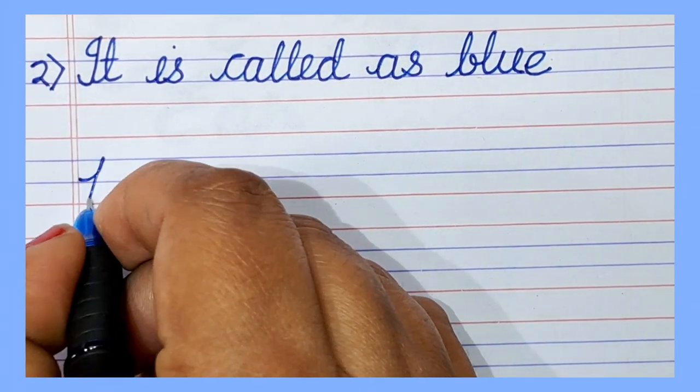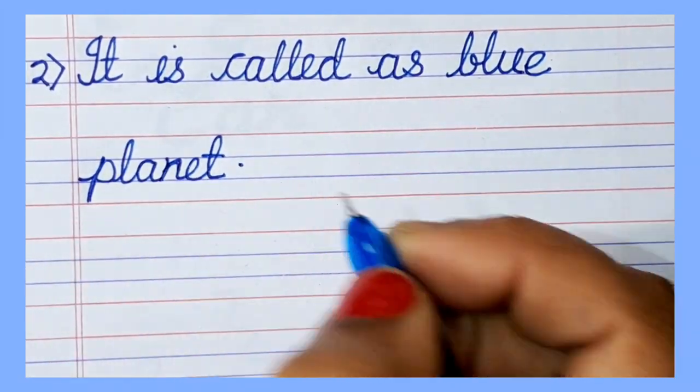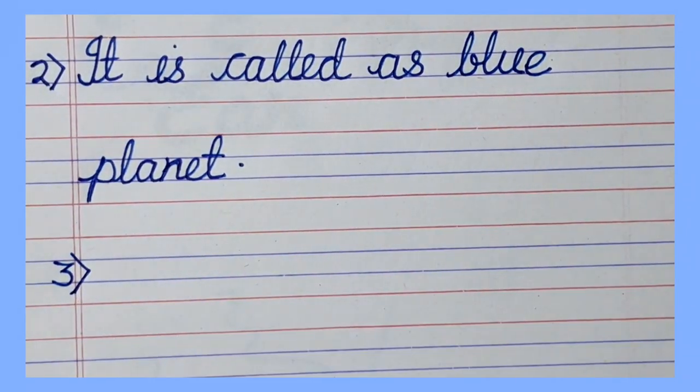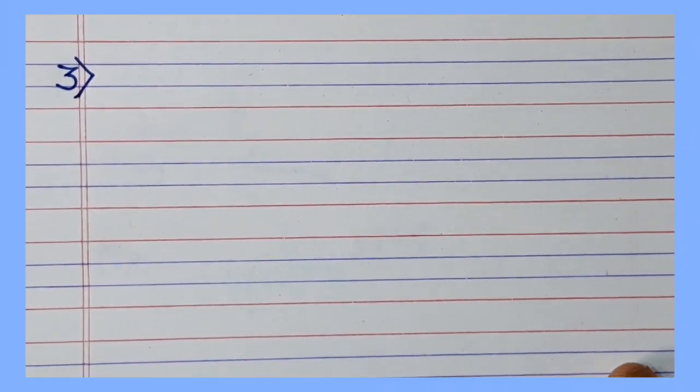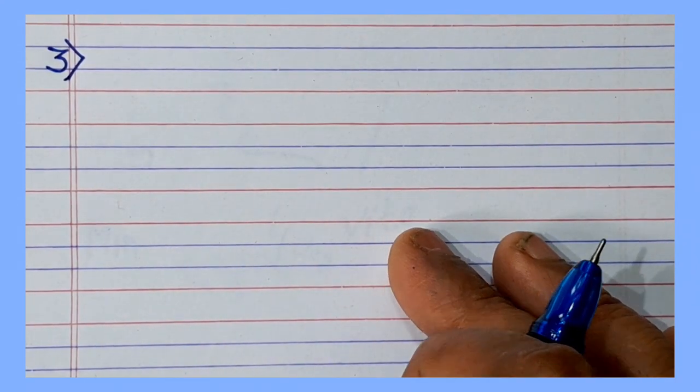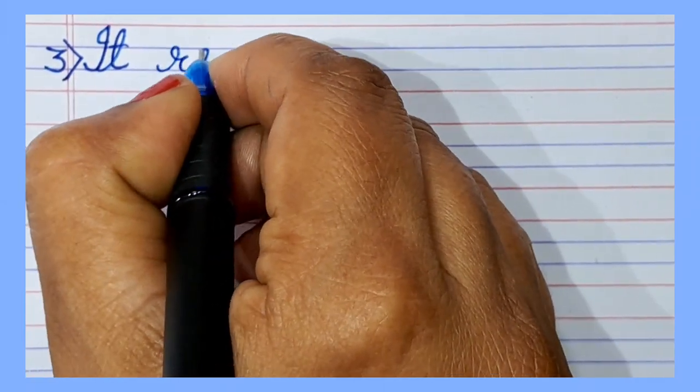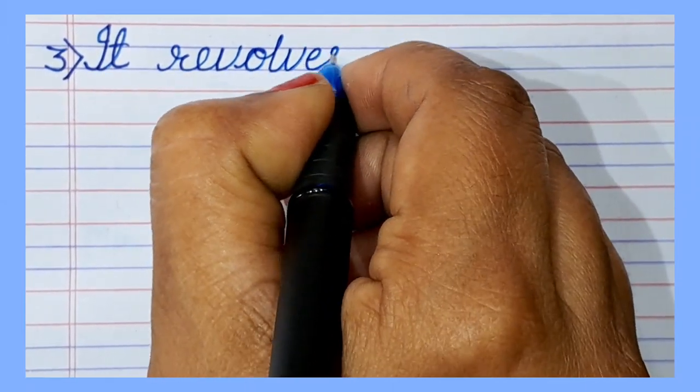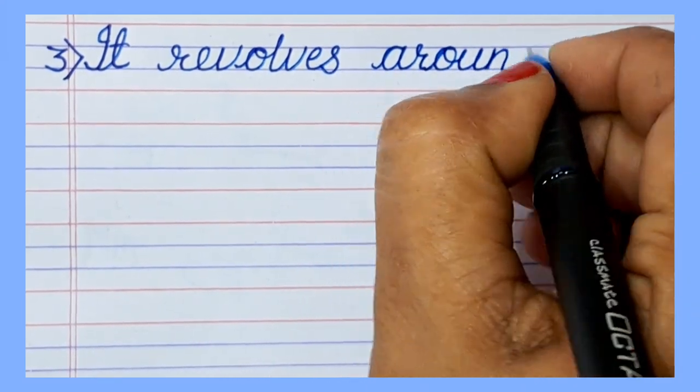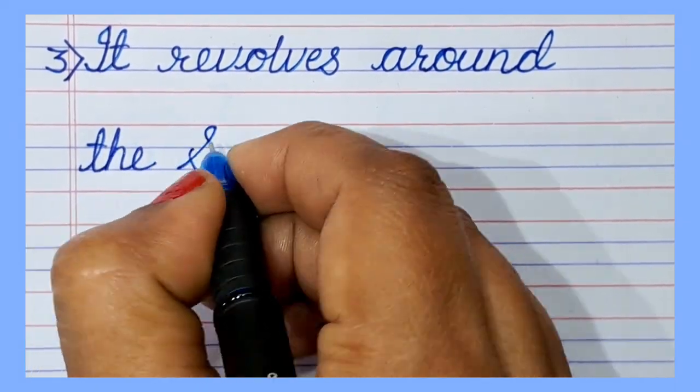It is called as Blue Planet. It revolves around the sun.